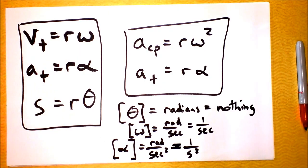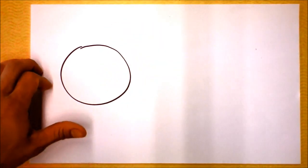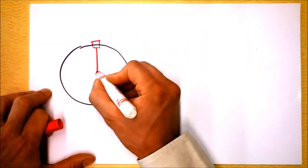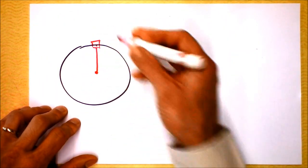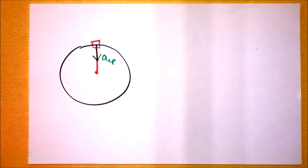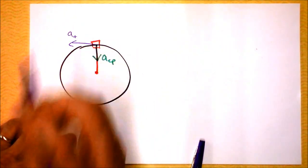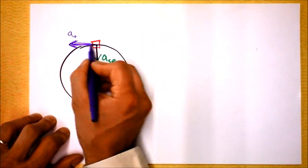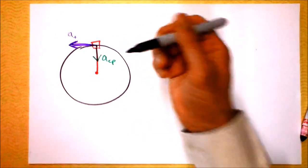One final thought on centripetal versus tangential acceleration: consider a dog on a leash staked at the center going around in a circle. The dog certainly has centripetal acceleration pointing toward the center. The dog could also have tangential acceleration in the direction of motion, meaning it's speeding up or slowing down. So there can be acceleration that changes speed and acceleration that just causes the circular turning.